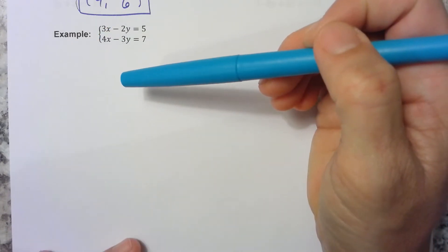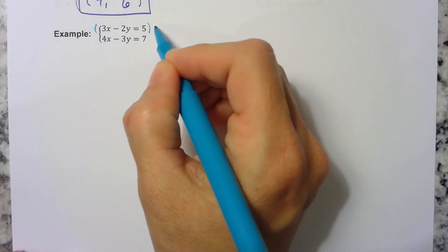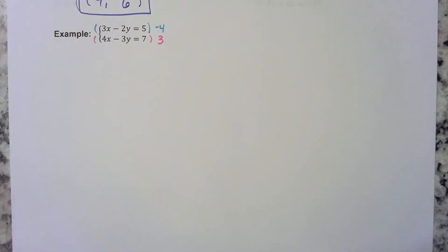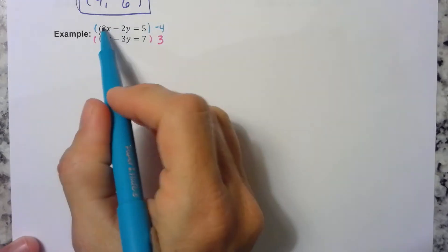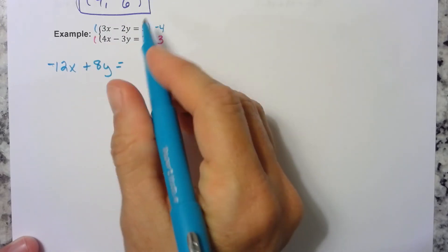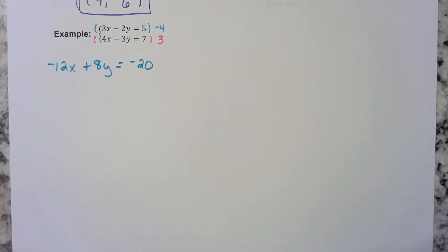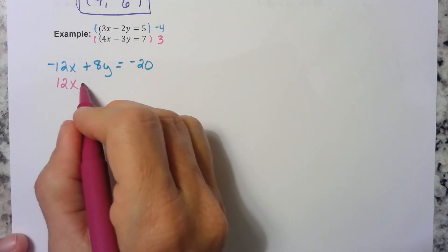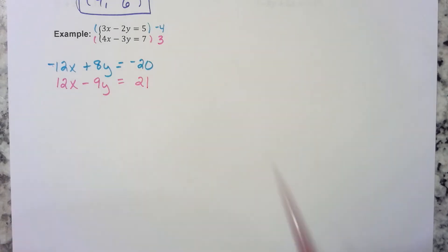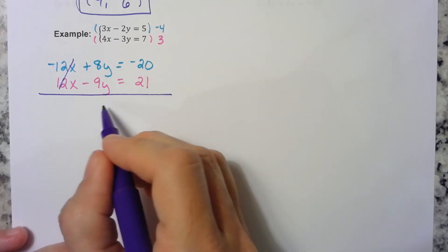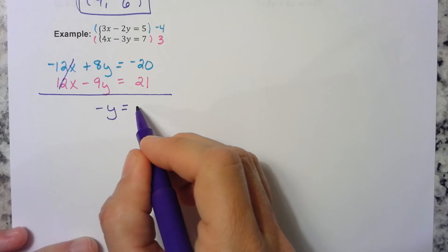have to be the same number with opposite signs. So what if I were to multiply this one by a negative 4, and what if I were to multiply this one by a 3? What happens? Negative 4 times 3x is negative 12x. Negative 4 times negative 2y is positive 8y. And negative 4 times 5 is negative 20. Here we have 3 times 4x is 12x. 3 times negative 3y is negative 9y. 3 times 7 is 21. Now we can add them together. These go away. 8 minus 9 would be negative 1y. Negative 20 plus 21 is a positive 1.